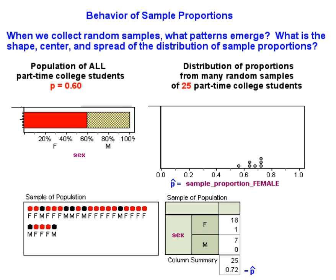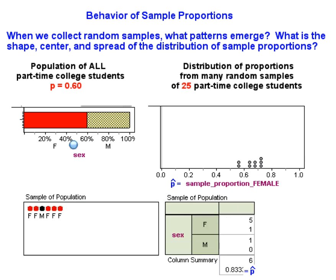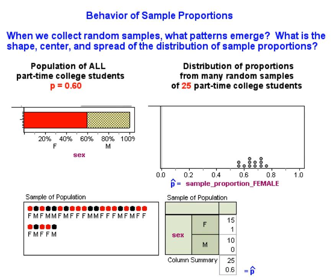What we're interested in is what is going to happen when we begin to collect many random samples. While we run the simulation, we want you to pause the movie and make some predictions. We want you to think about, if we collect many, many random samples, what will be the shape and center and spread of the distribution that results.